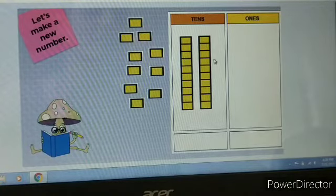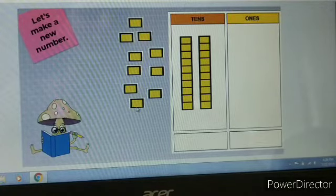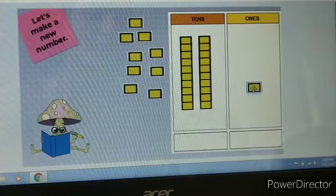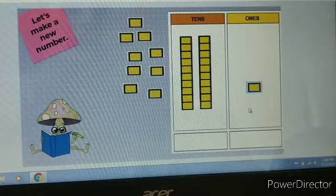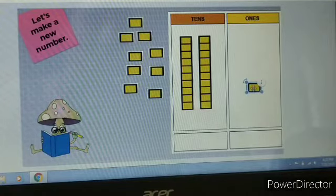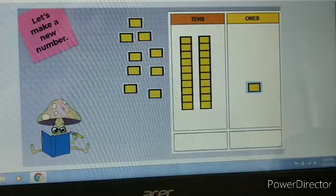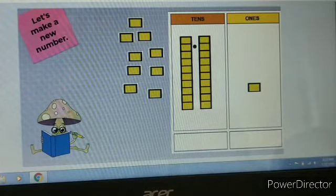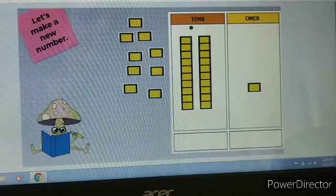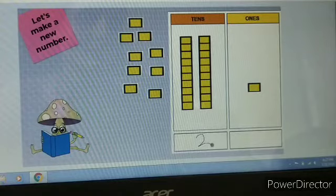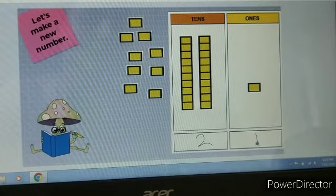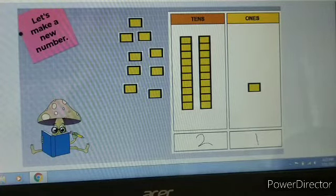Two tens makes number twenty. Now, if I keep one block in one's place — how many ones are here? One one. So let us see which number it makes. We have two tens and how many ones? One one. So, it made our number twenty-one.